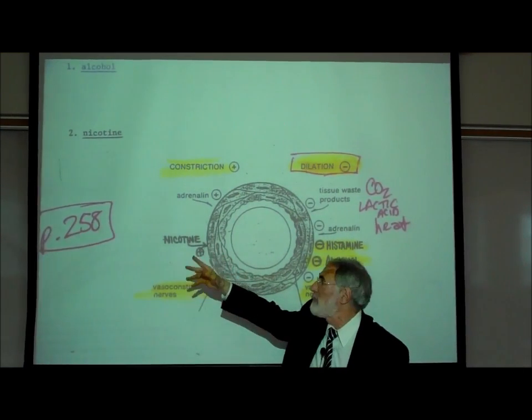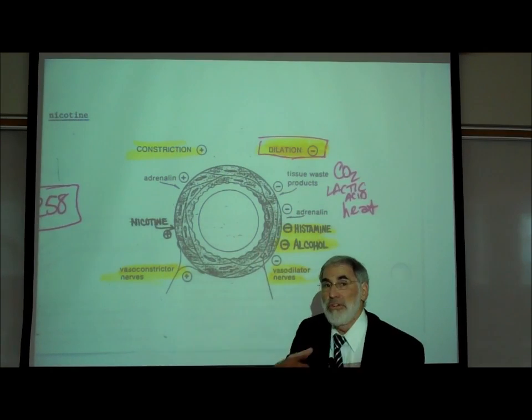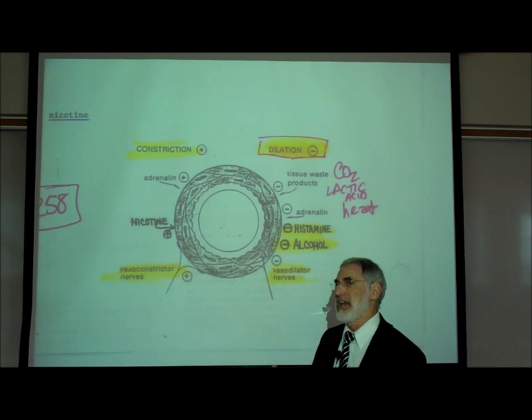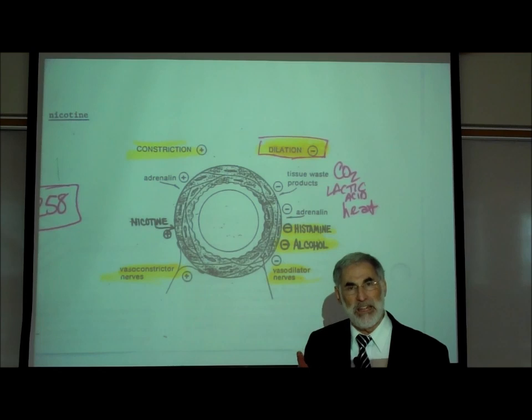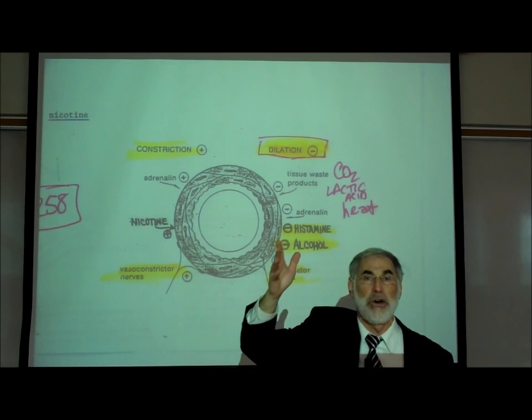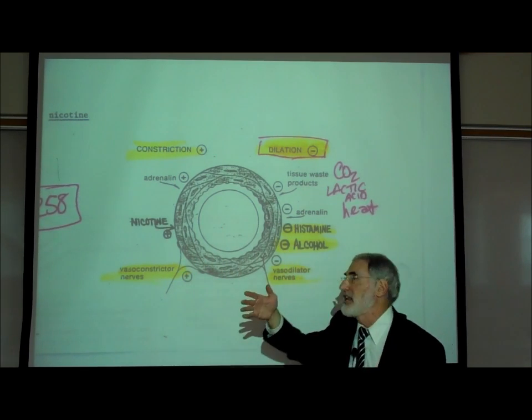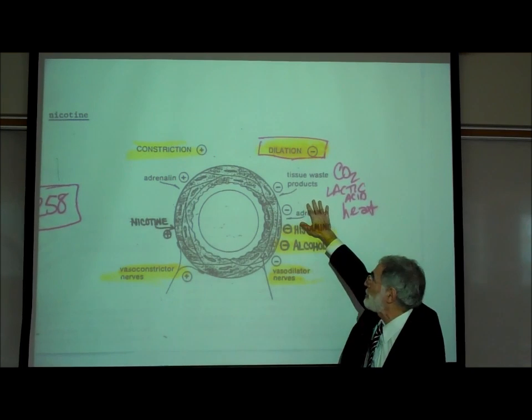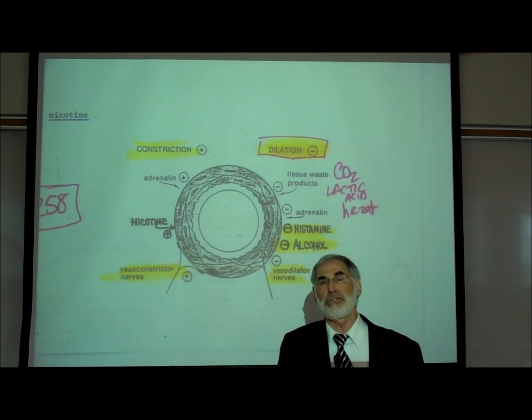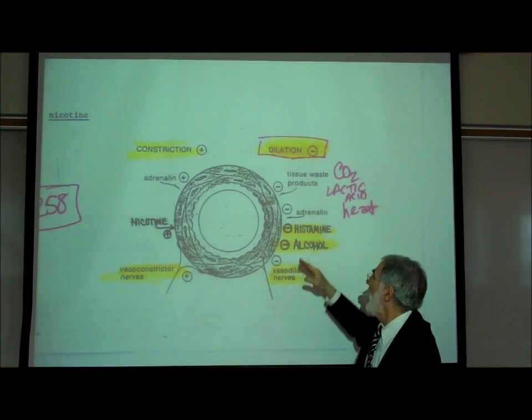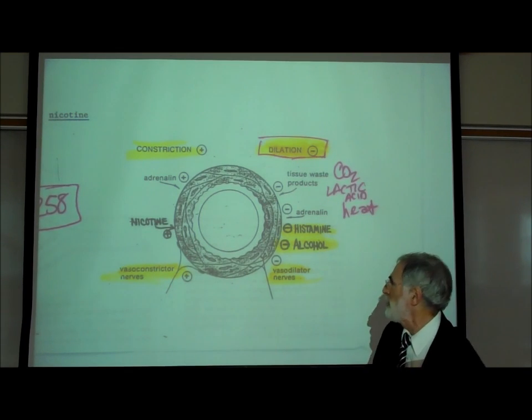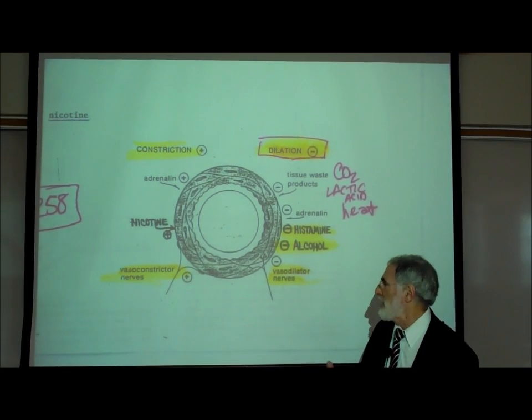But then there are a myriad, a multiplicity of local factors. Nicotine is a vasoconstrictor. On the other side, we've already learned the phenomenon called autoregulation or active hyperemia. An increase in metabolic rate within a tissue causes a decrease in localized oxygen level, increased CO2, increased acidity, increased temperature, and all of these factors tend to cause localized vasodilation. Histamine, which is one of the chemical mediators of inflammation, will cause localized vasodilation at a site of injury or inflammation. We've learned that alcohol is a vasodilator.